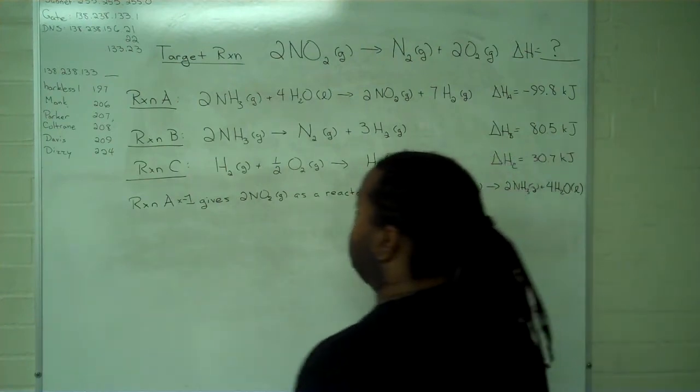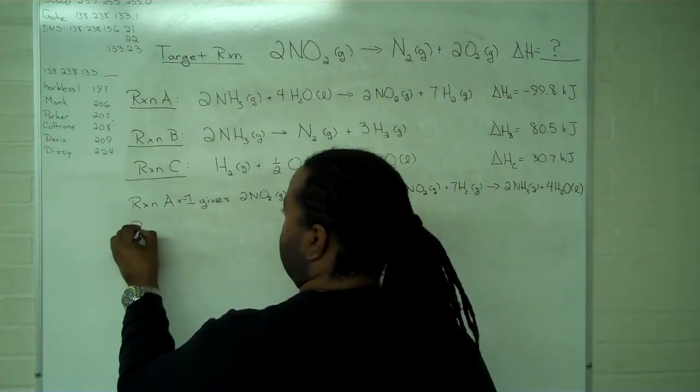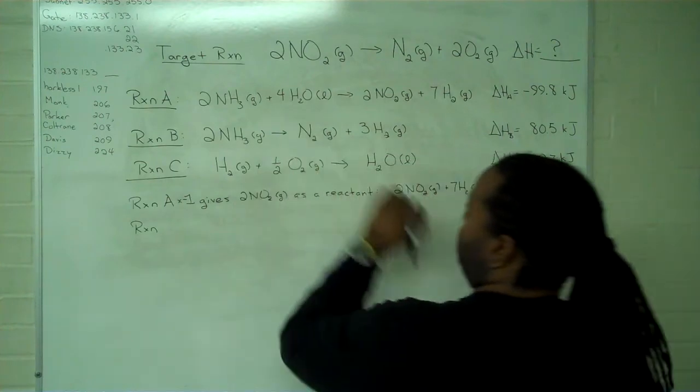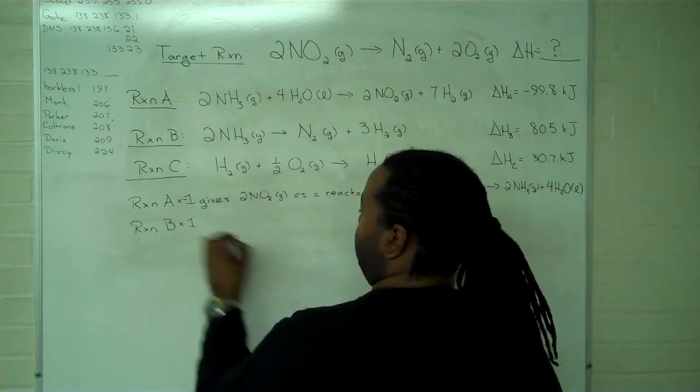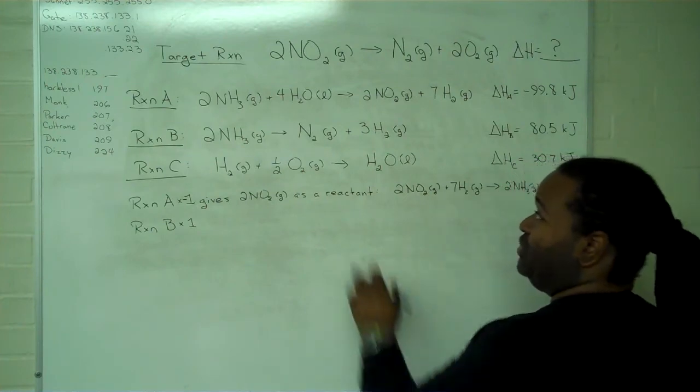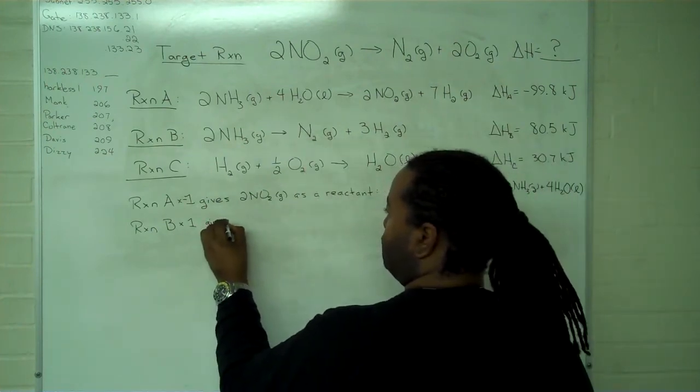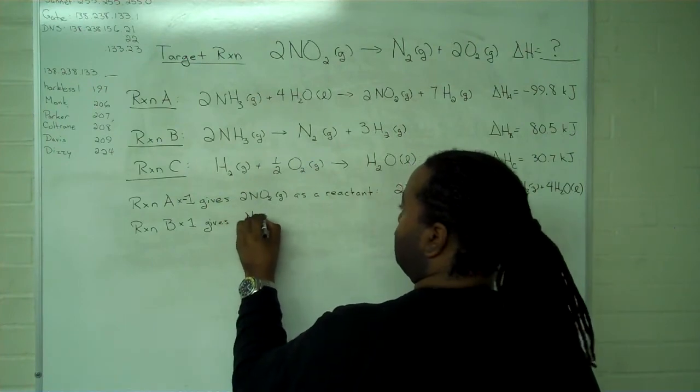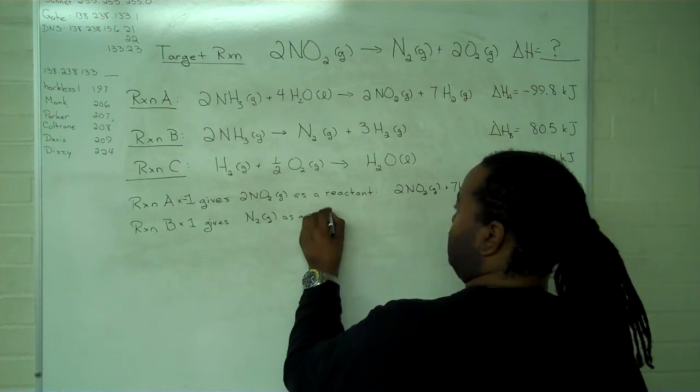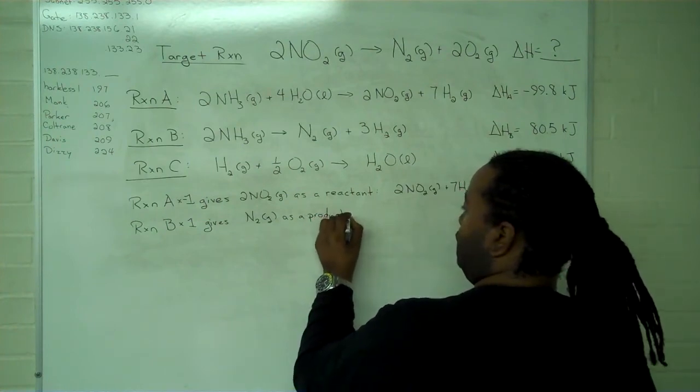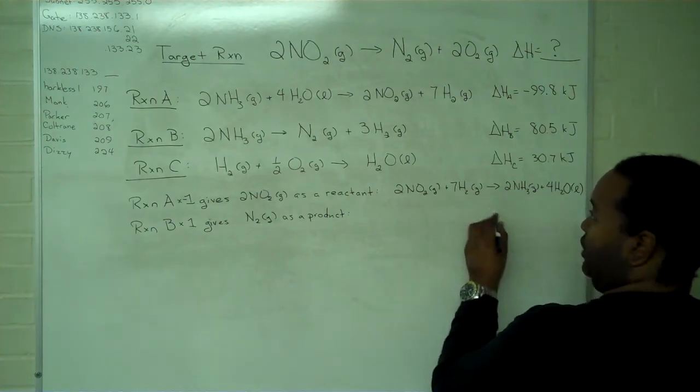I can next move to my products. I need one mole of nitrogen and reaction B has that already in place. It has it both in the correct amount and location. So because I have my one mole of nitrogen as a product, I only need to multiply reaction B by one, in effect leaving it alone.